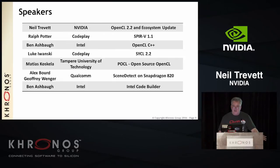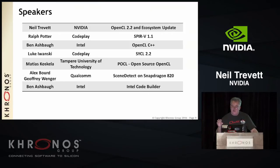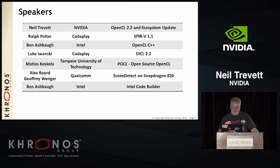The speakers we have today: Ralph from Codeplay will talk about SPIR-V and version 1.1. Ben from Intel will give a deep dive into OpenCL C++, the new kernel language. Luke from Codeplay will dive into SYCL 2.2. Matthias from Tampere University of Technology will talk about POCL, an open-source implementation of OpenCL. Alex and Jeff from Qualcomm will discuss a neural net application on mobile running on Snapdragon 820 using OpenCL. And Ben will return at the end to discuss Intel's latest code generator tools for OpenCL.